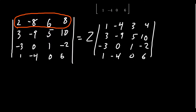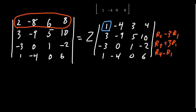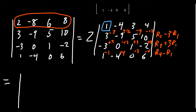I'll take row 2 minus 3 times row 1, row 3 plus 3 times row 1, and row 4 minus row 1. That gives us: second row: −3, +12, −9, −12; third row: +3, −12, +9, +12 (same numbers, different signs); fourth row: −1, +4, −3, −4. Because row replacement is free, there's no cost to these operations.